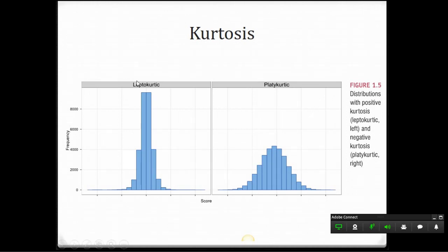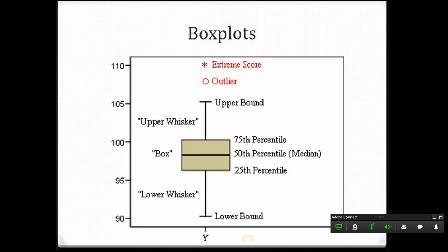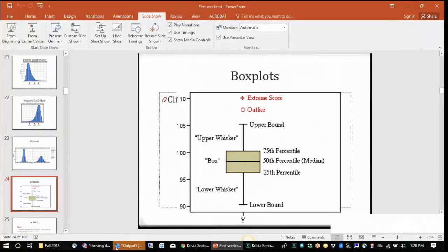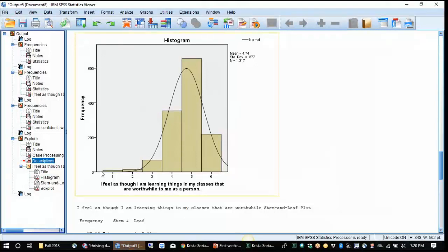In kurtosis, as I mentioned, leptokurtic looks a little bit like a tower. So you can see the data are very closely packed around the mean versus platykurtic. And in platykurtic, we have much greater standard deviations, which again we'll talk about in measures of dispersion or variation. There's a lot more variation happening in the platykurtic data. And you can see the platykurtic looks like a little platypus, which is why it's called platykurtic.